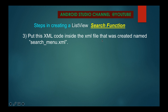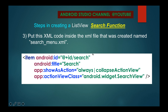Step three: put the XML code inside the search_menu.xml file. You have an item tag with an ID of 'search'. Put the title 'Search' with a capital S. There are two attributes you need: 'showAsAction' with the value 'always|collapseActionView', and 'actionViewClass' with the value android.widget.SearchView. You can copy this and put it inside your XML.